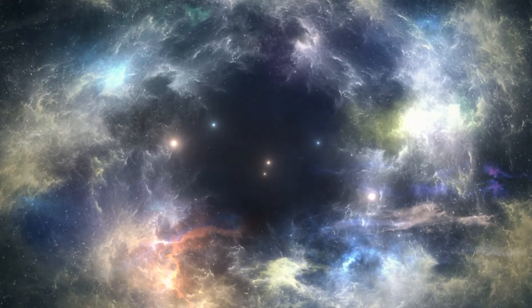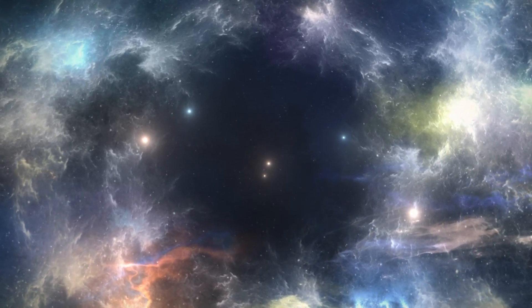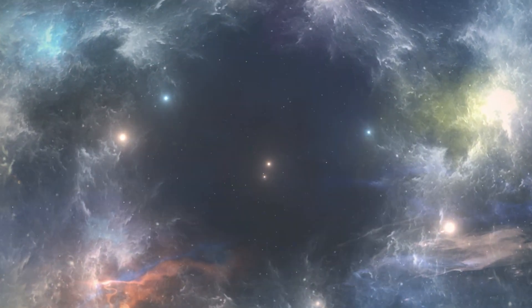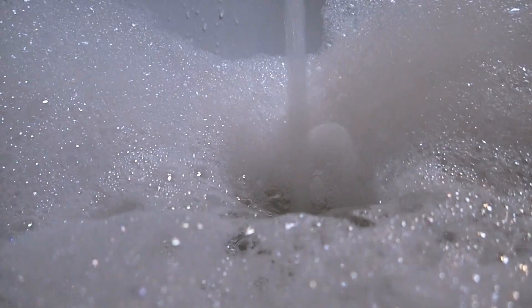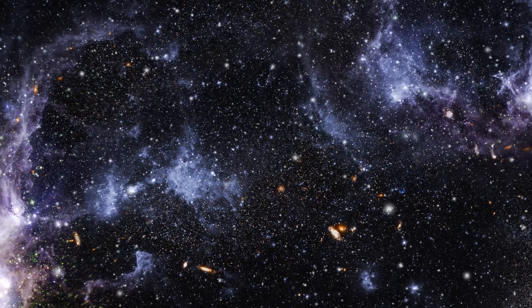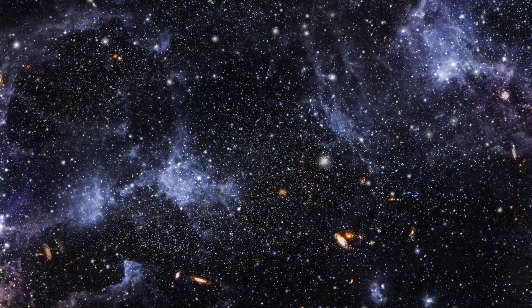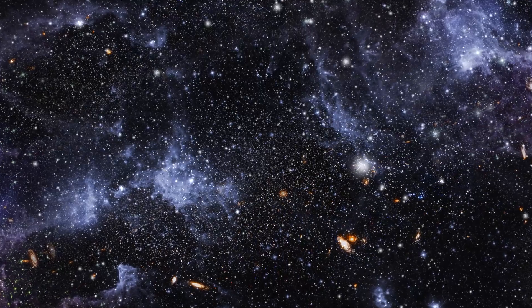As we observe the cosmos, it often resembles a vast web, with invisible strands of dark matter supporting its structure. Think of it as a cosmic foam, like bubbles in a bathtub. Galaxy clusters gather in walls, filaments, and intersections, similar to where soap bubbles cluster in a sudsy bath.